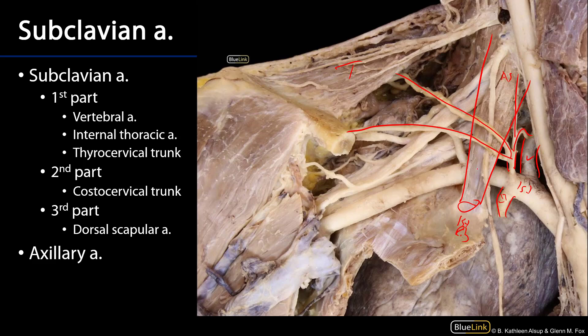We can't see the second part of the subclavian artery because it is occluded behind the anterior scalene muscle, but there is a small trunk there called the costocervical trunk which has two major branches. There's the deep cervical artery which supplies some of the deep neck muscles, and the supreme intercostal artery which supplies the first and second intercostal spaces with blood.